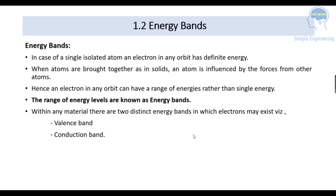Energy bands. In the case of a single isolated atom, an electron in any orbit has definite energy. So when atoms are brought together, it is influenced by the forces from each other. So an electron in an orbit can have a range of energies rather than a single energy, and this range of energy levels is known as energy bands.